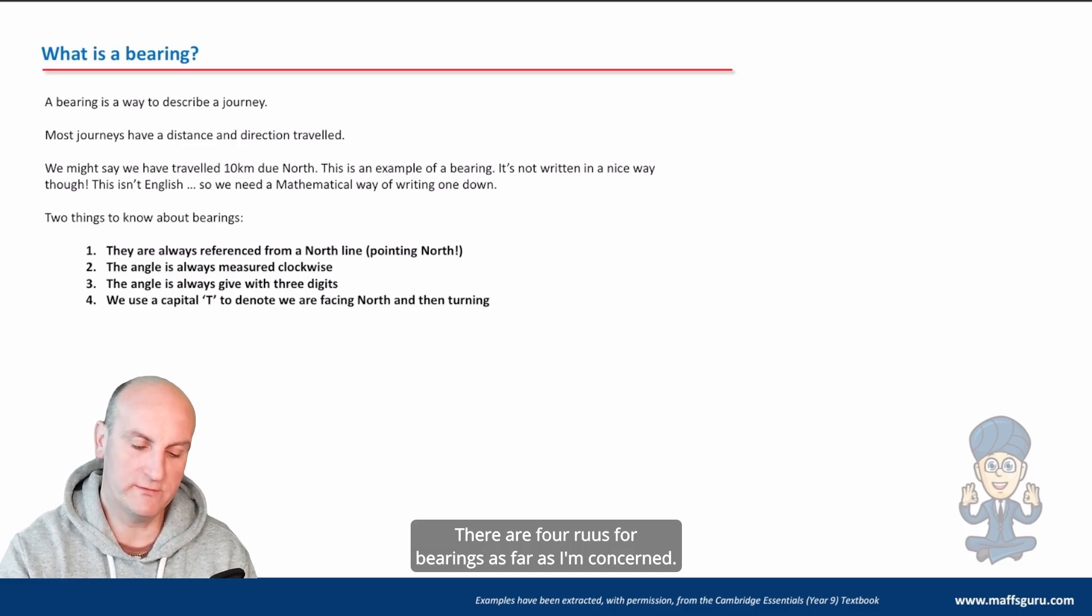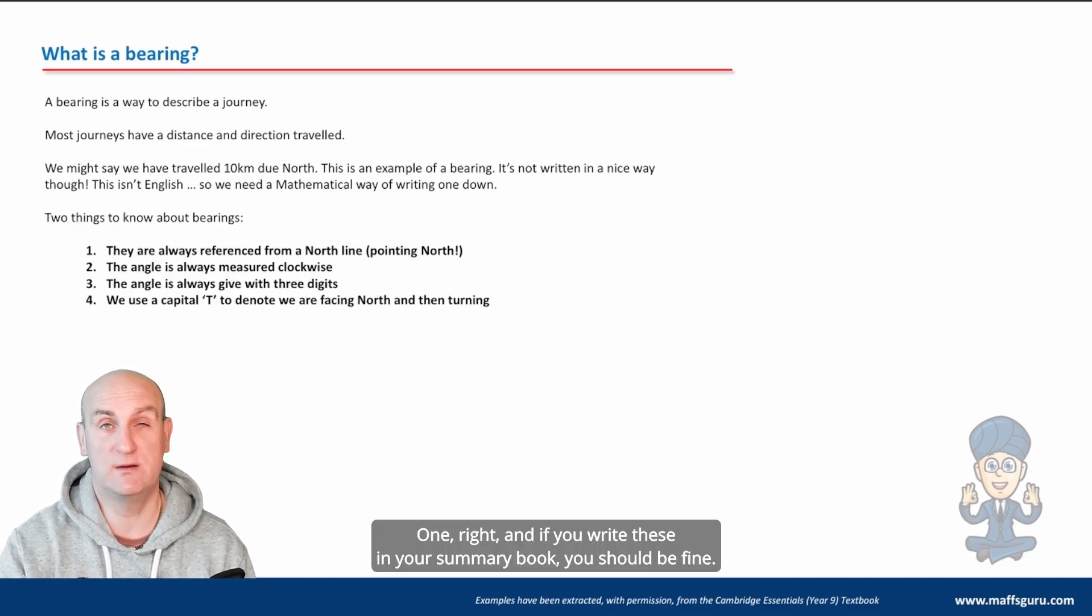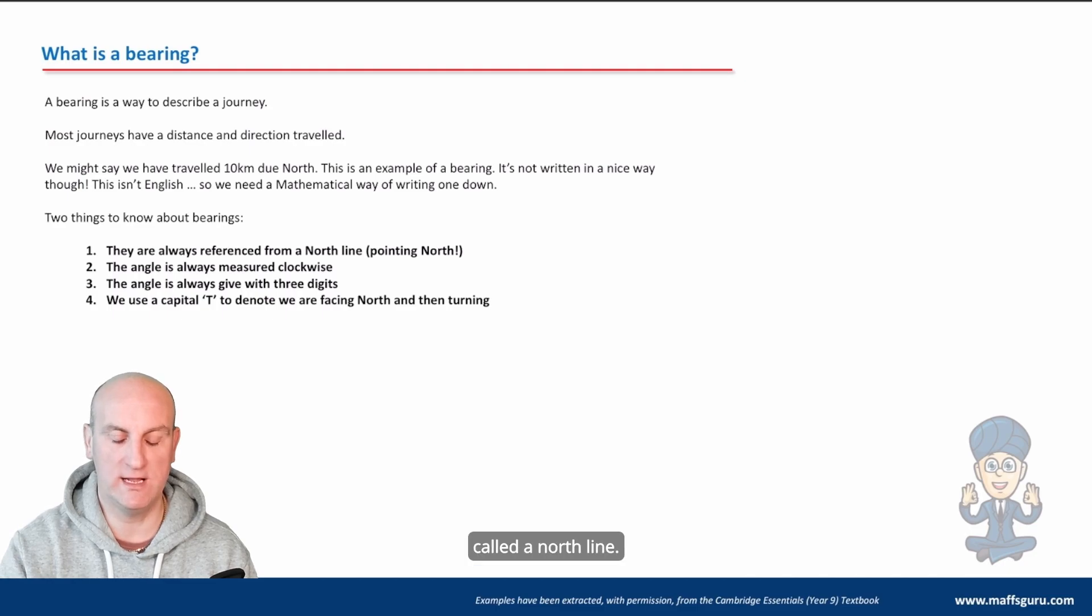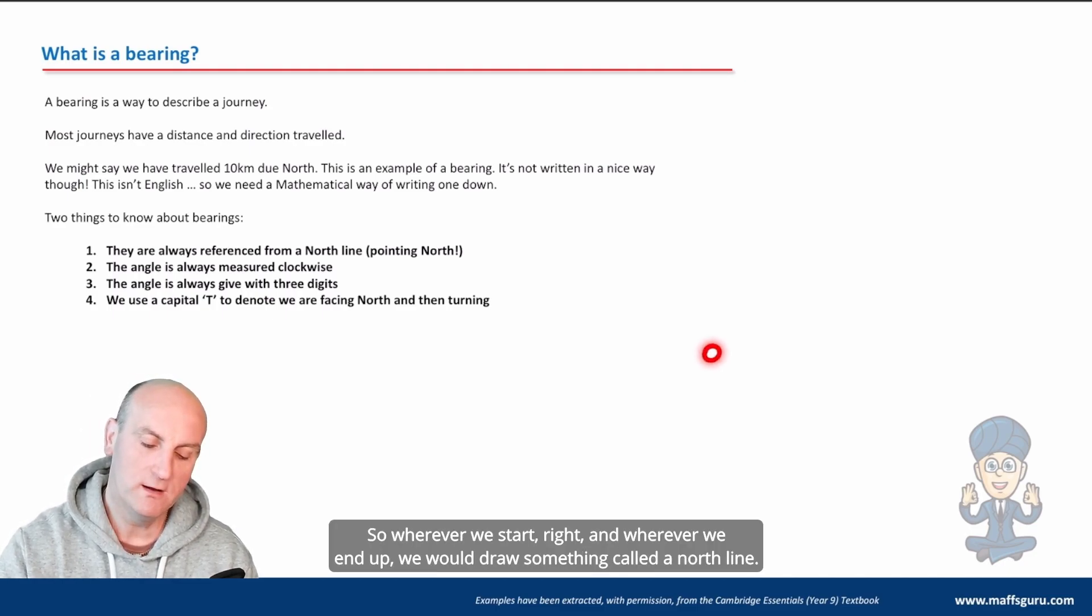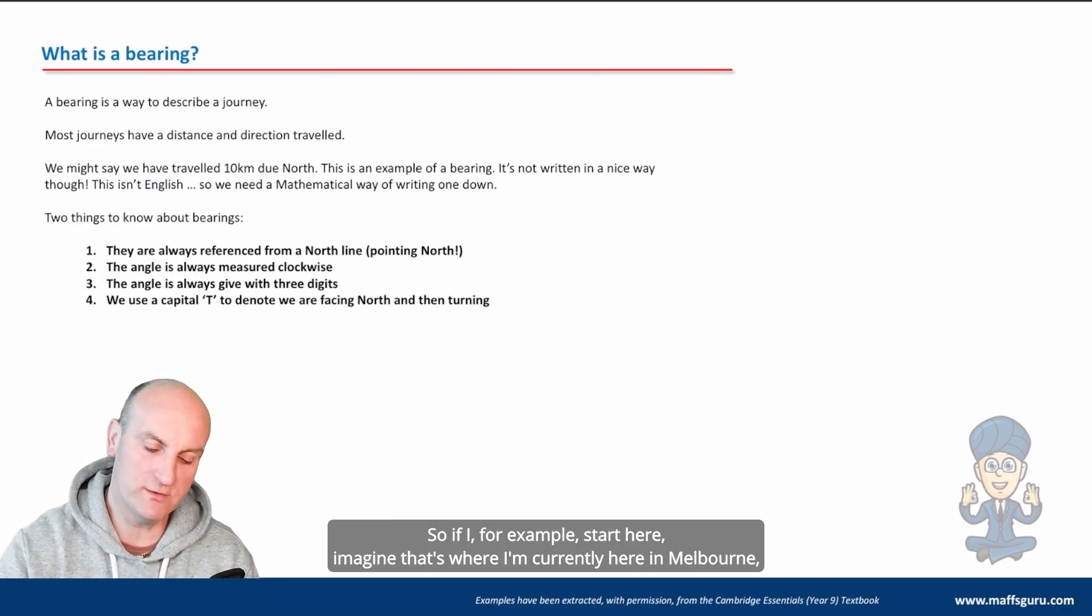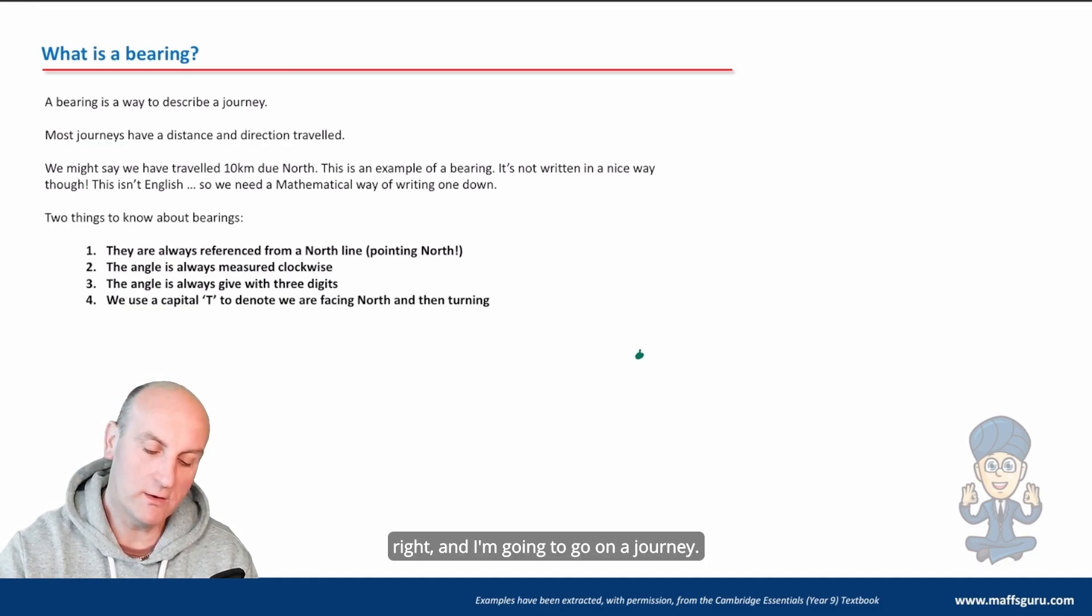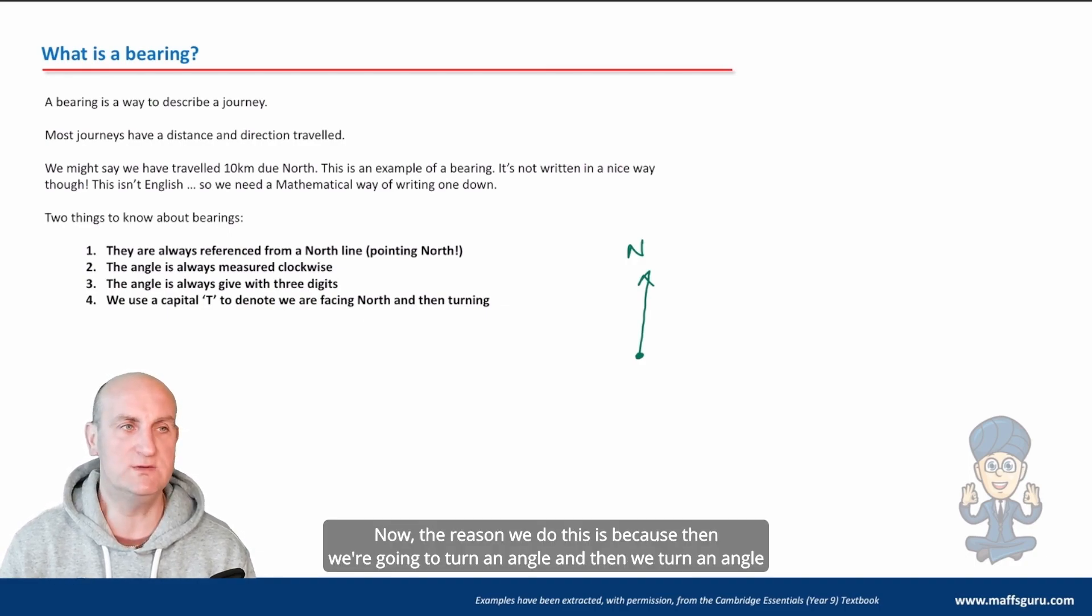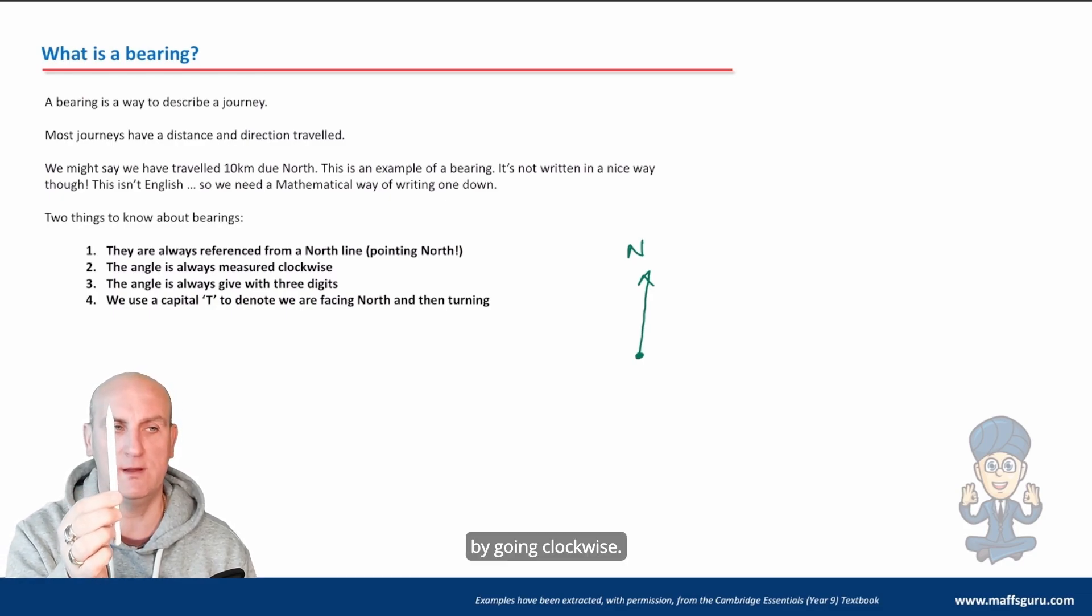Now, what is a bearing? There are four rules for bearings as far as I'm concerned. One, and if you write these in your summary book you should be fine. One, that they are always, I say always, they're generally referenced from something called a north line. So wherever we start and wherever we end up, we would draw something called a north line. It's really just a reference for us to be able to then draw an angle. So if I, for example, start here, imagine that's where I'm currently here in Melbourne. And I'm going to go on a journey. I would initially draw a north line. It was a vertical line. And I know that's not even vaguely vertical, but I tried my best.